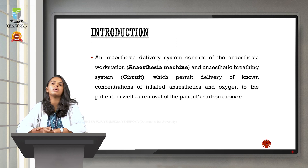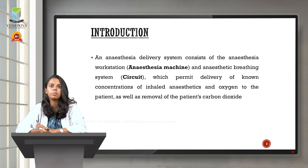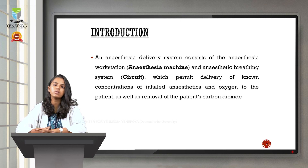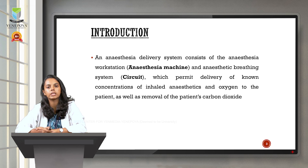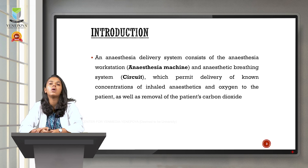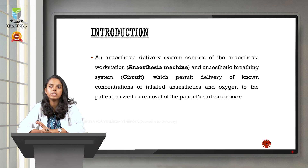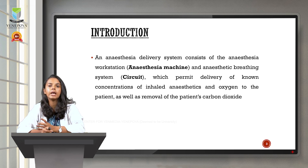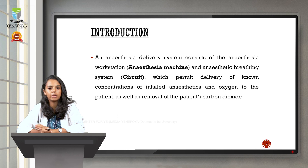The anesthesia delivery system mainly consists of the anesthesia machine as well as the breathing circuit. Combining the anesthesia machine and the breathing circuit gives us the anesthesia delivery system. Anesthesia is not just one particular gas — it's a mixture of gases that we give to the patient in order to facilitate a surgical procedure. The main function of the anesthesia machine is to deliver a known concentration of anesthetic mixture of gases to the patient, as well as to remove the carbon dioxide exhaled by the patient.